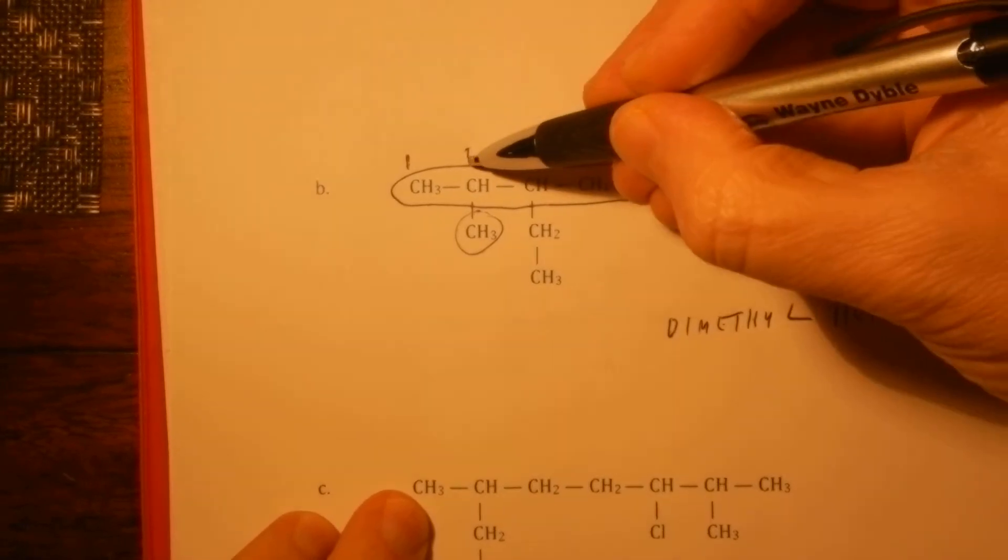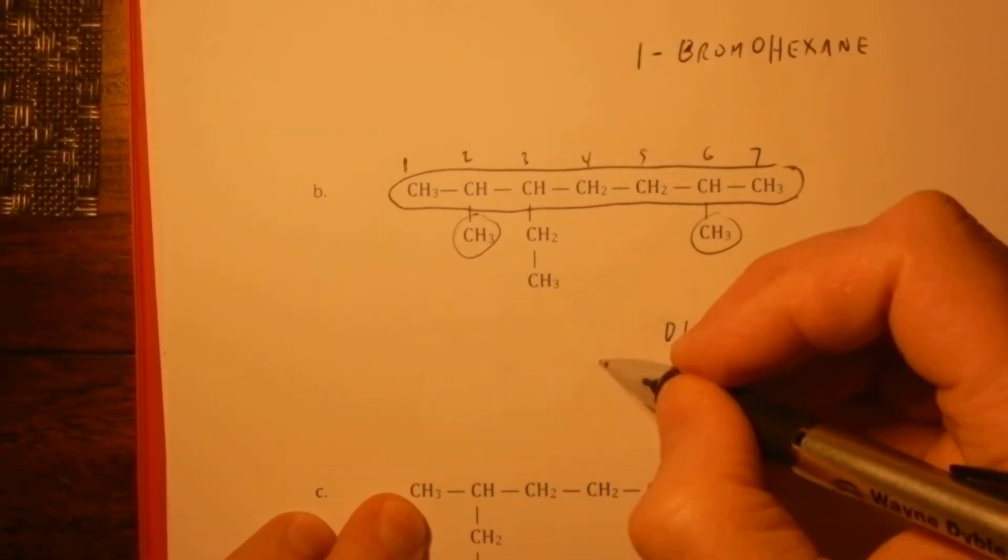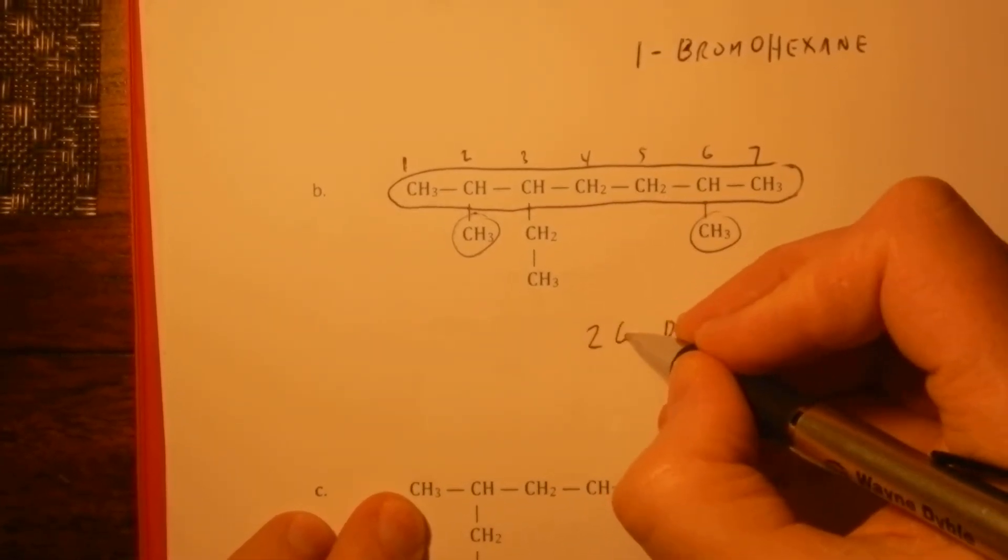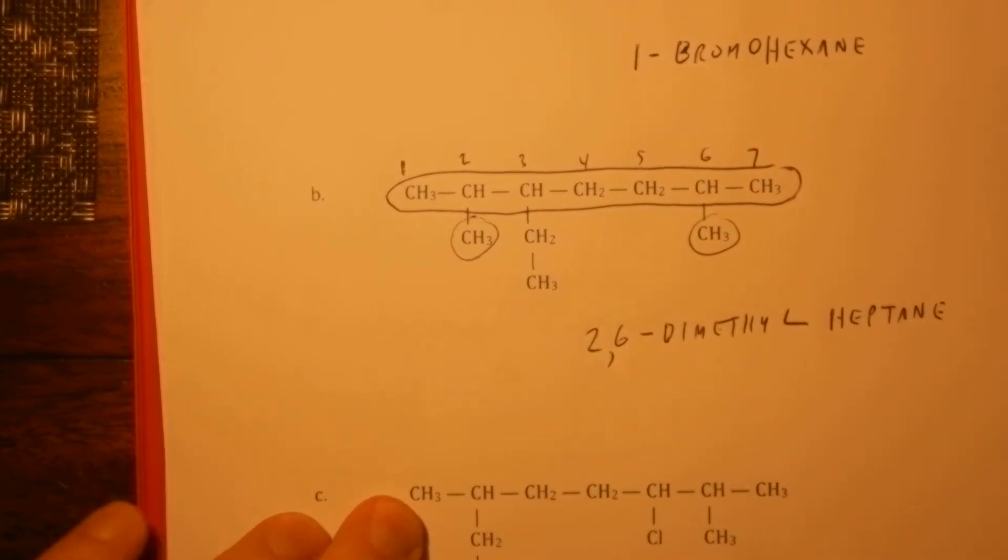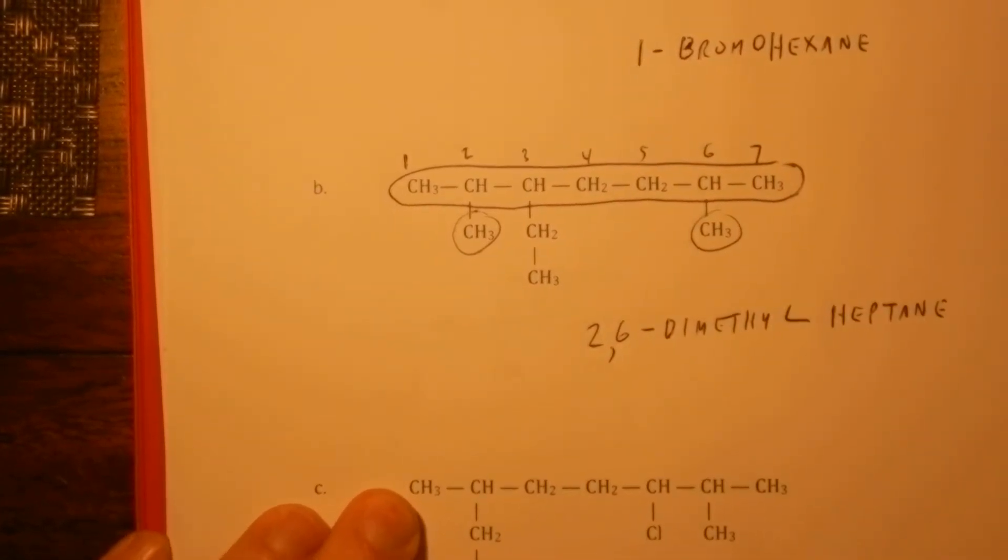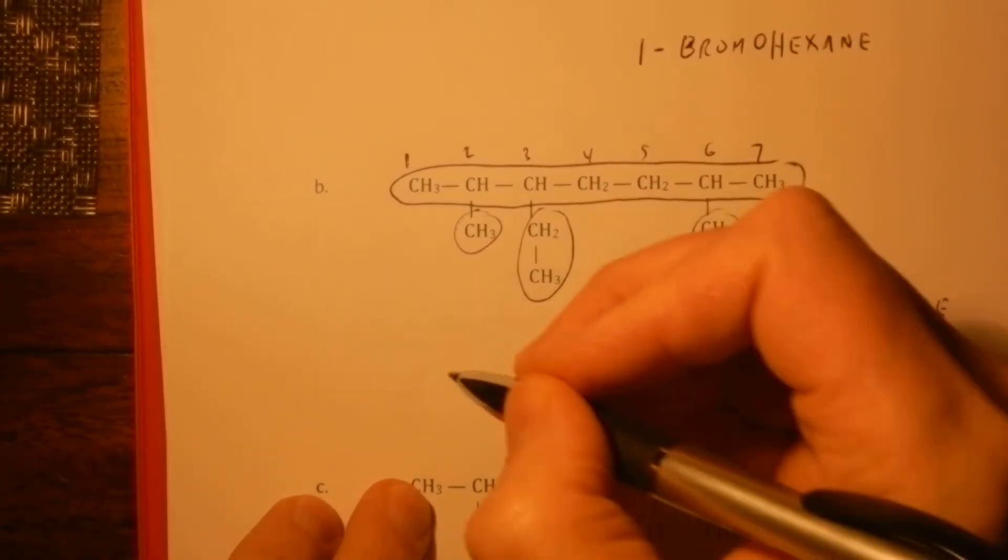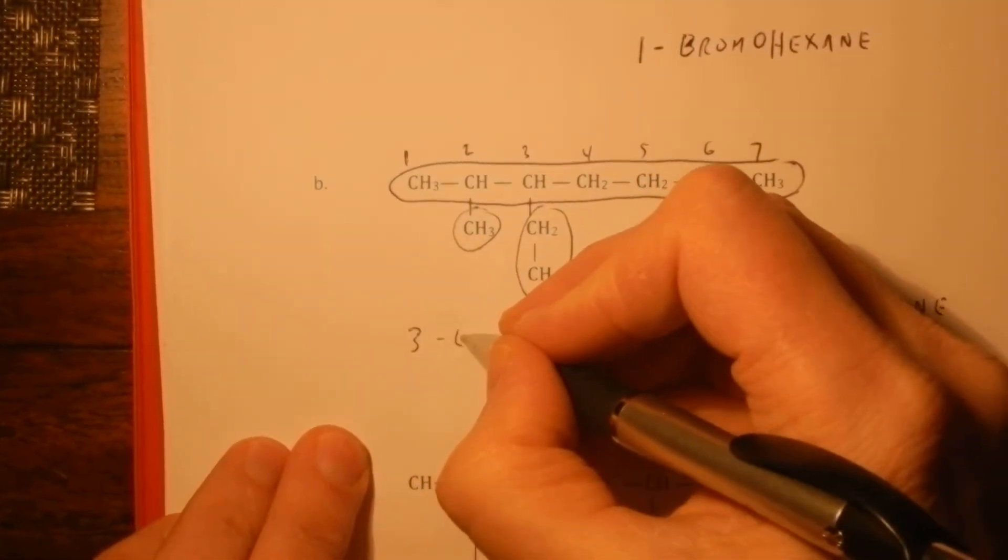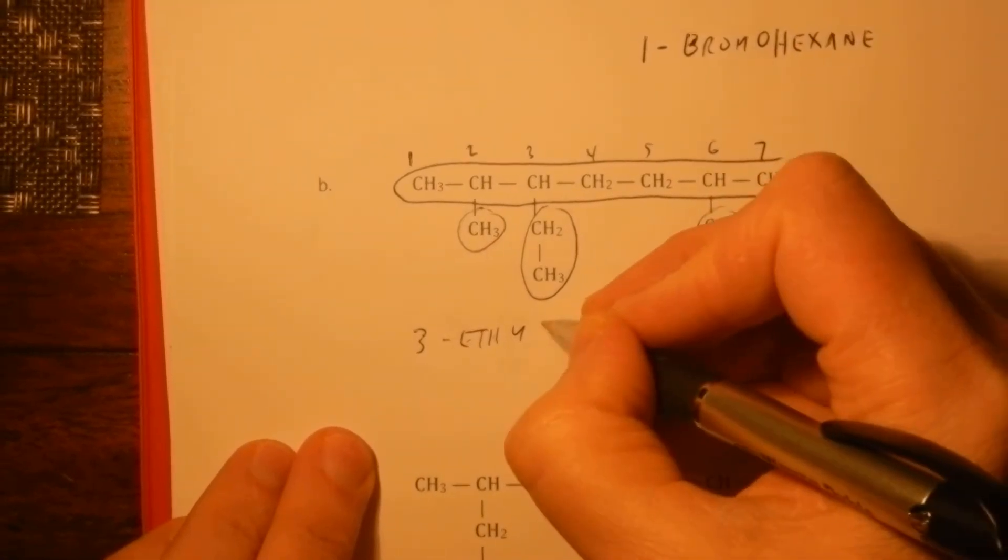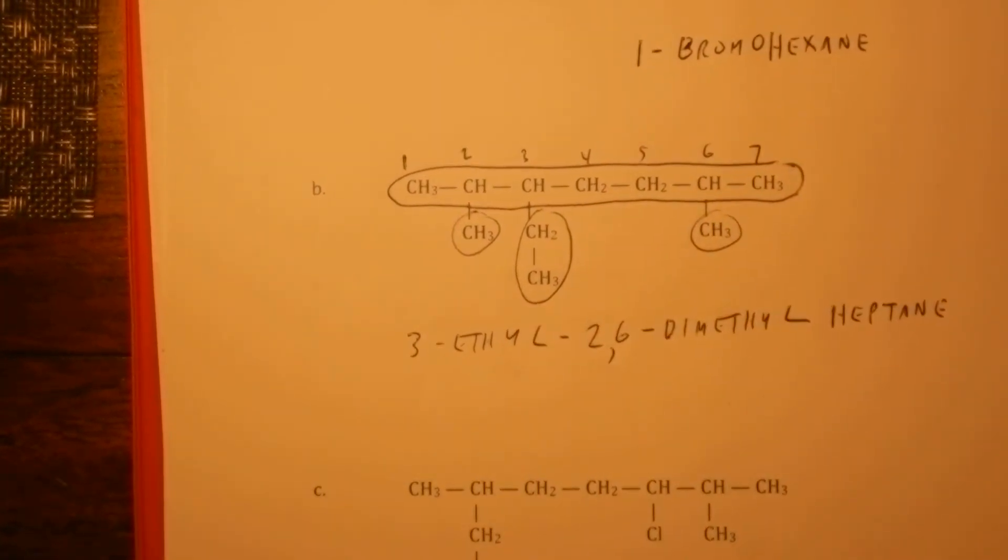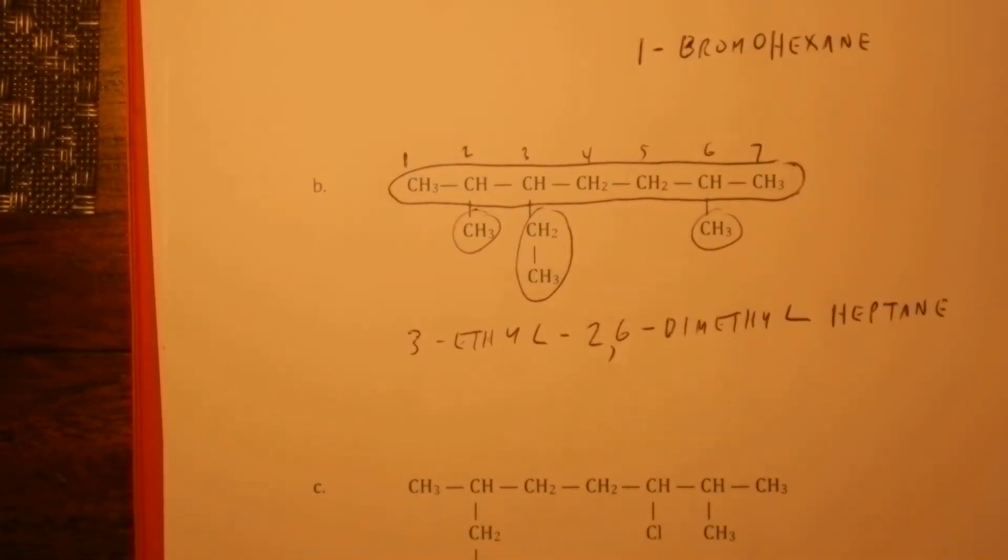It means I have two methyls there. Now, I need to give an address. One is off the second carbon. One is off the sixth carbon. So I go 2,6-dimethyl heptane. And here I have an ethyl off the third. So I go 3-ethyl-2,6-dimethyl heptane.